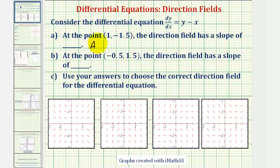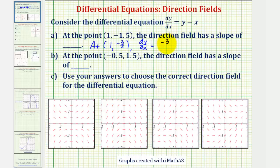So at the point (1, -3/2), dy/dx would be equal to y minus x, which would be -3/2 minus 1, or minus 1 over 1.